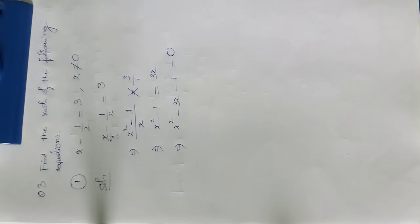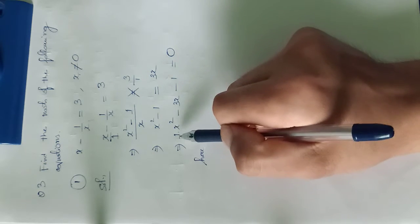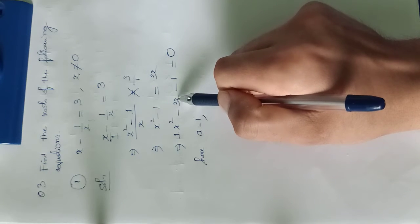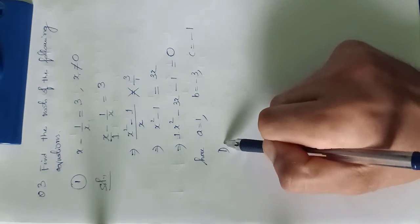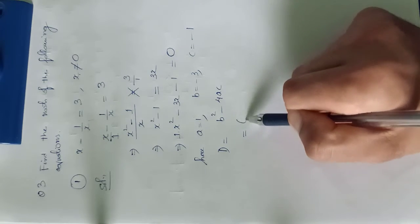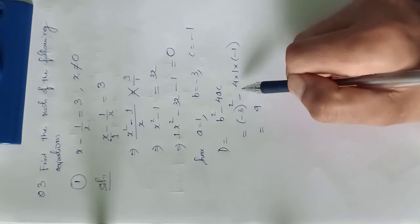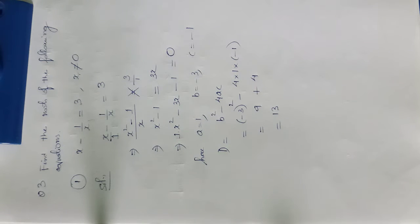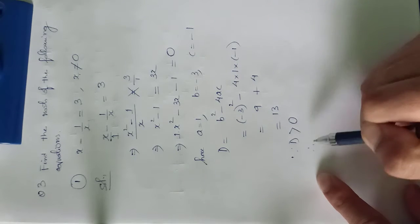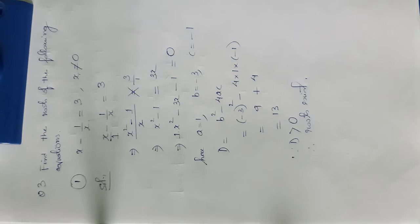In order to determine the roots, let us check whether they exist by checking the value of D. The coefficient of x² is 1, so a = 1. The coefficient of x is −3, so b = −3. The constant term is −1, so c = −1. D = b² − 4ac = (−3)² − 4(1)(−1) = 9 + 4 = 13. Since 13 is a positive quantity, D is greater than 0. Therefore, real roots exist and we can determine them.